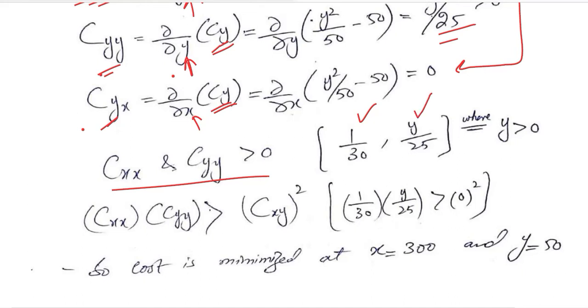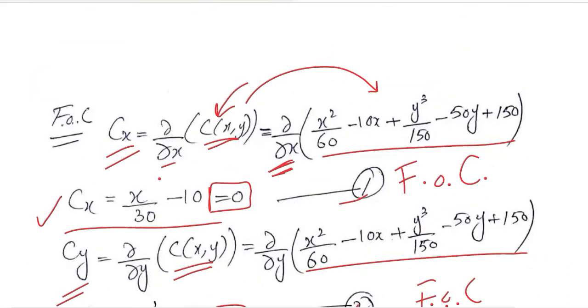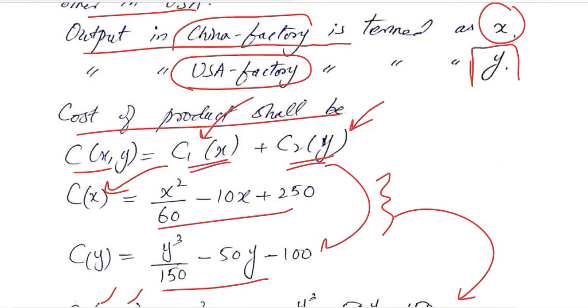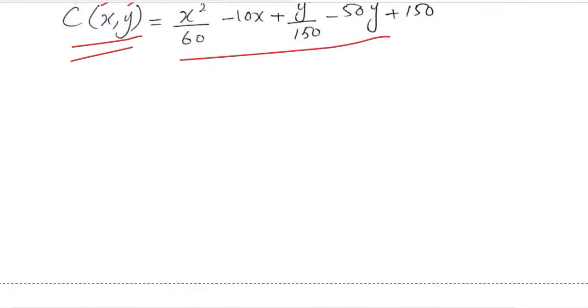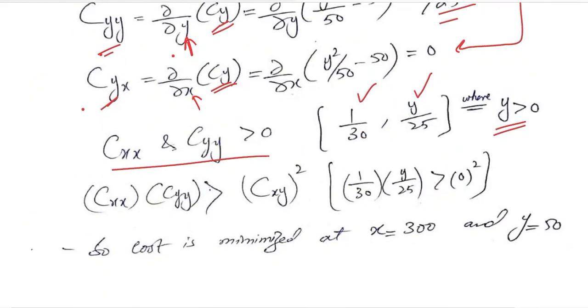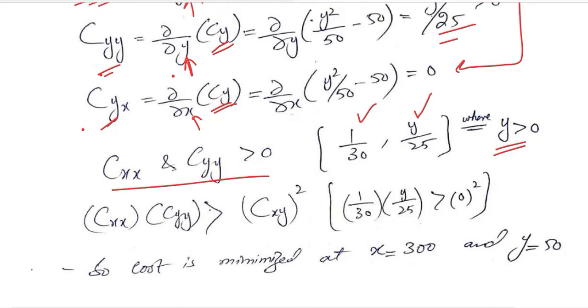Y is a positive value as it is the cost incurred in some output produced in the USA factory. This is the output, so output cannot be negative. Therefore, the answer of Y over 25 will be positive—a positive value divided by 25. This was the necessary part of the second order condition. We can also consider the sufficient part of the second order condition.